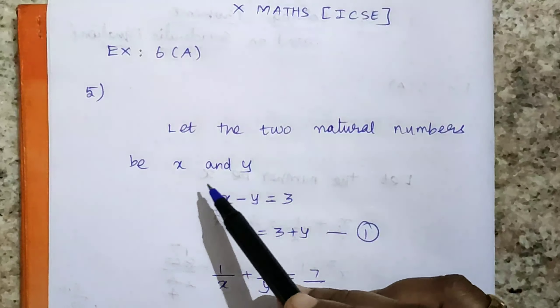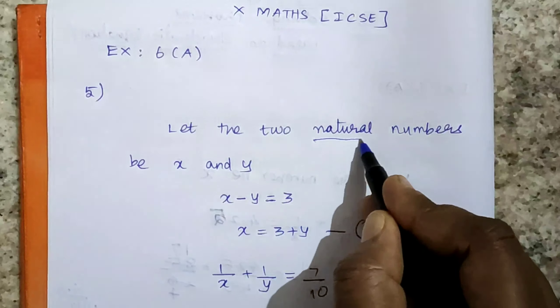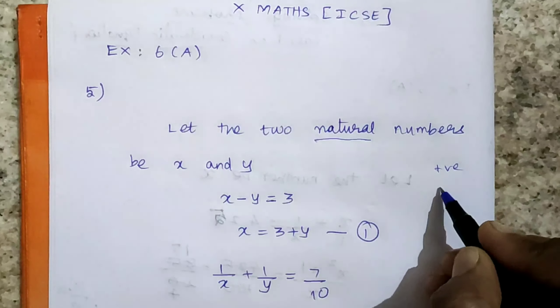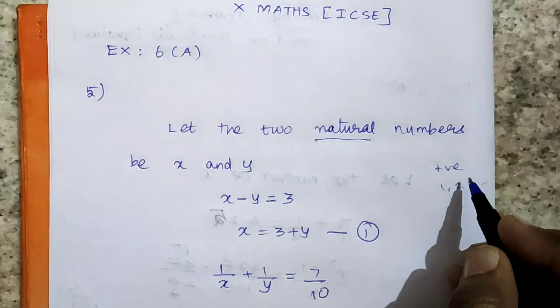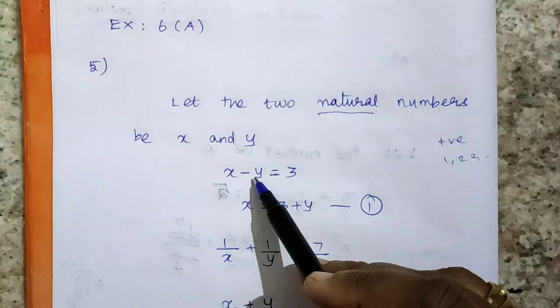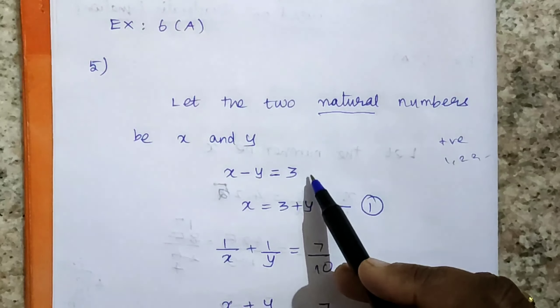Let the two natural numbers be x and y. Natural number means positive integers only, starting with 1, 2, 3, etc. Negative integers don't come. x minus y equals 3, that is, the difference is 3. Differ by 3 means the difference is 3.